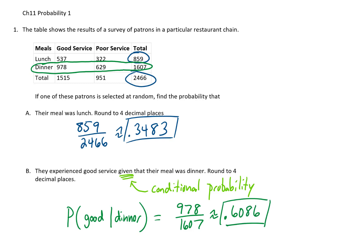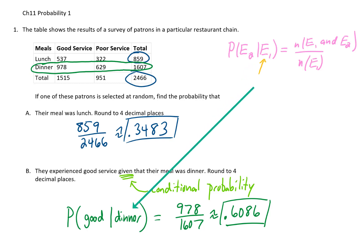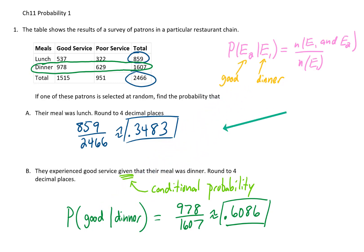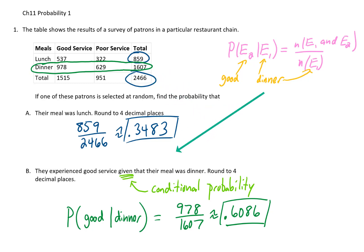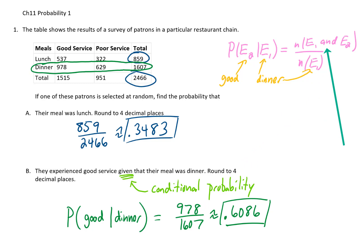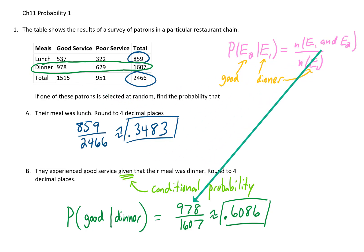We can recall that we had a formula for conditional probability. In this example, event 1 is that the patron was there for dinner, and event 2 is that they got good service. The formula says our denominator should be the number of patrons who were there for dinner, which is 1,607 from our table — and that checks out. The numerator should be the number of patrons who were there for dinner and got good service, which is 978 from the chart — and that checks out as well. So it looks like we did this problem correctly, whether we use that formula or not.